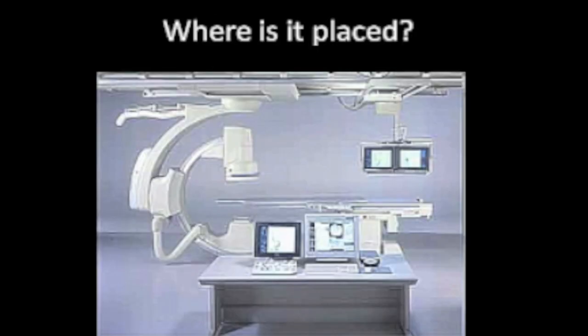Where is a stent placed? This is a standard interventional radiology suite. You have an x-ray tube that goes through the patient, the image intensifier absorbs the x-rays, and then it converts them off to an image so that we can actually see what's going on.